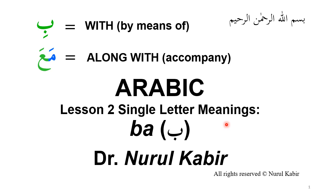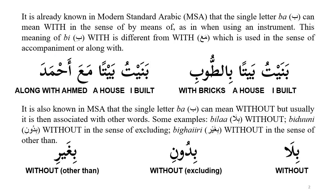Welcome to lesson two of the singular meanings. Today we'll be discussing the meanings of the letter Ba. One meaning you probably already know is 'with,' which is used in the sense of binding. In English the word 'with' can be used in different ways, and in Arabic, Ba specifically means 'along with' or is used in the case of accompaniment.